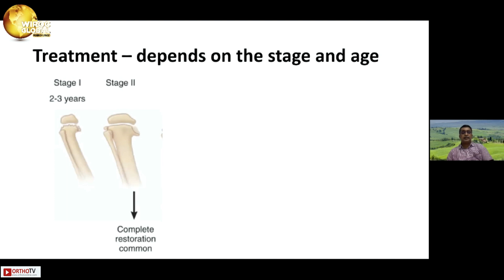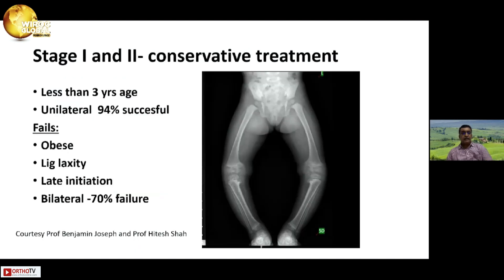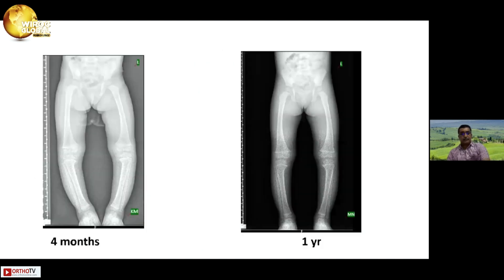Treatment depends on the stage and age. For stages 1 and 2 between ages 2 and 3 years, I would prefer conservative treatment, provided the patient is less than 3 years of age. In unilateral cases there is almost nearly 100% success, but if it is a bilateral case with an obese child, ligamentous laxity, or late initiation of treatment after 3 years of age, there is a high risk of failure of conservative treatment.